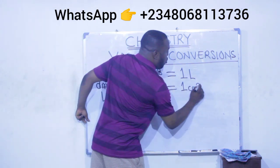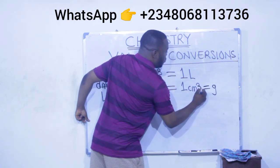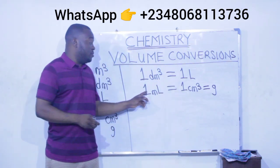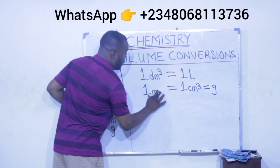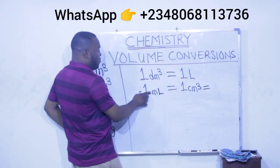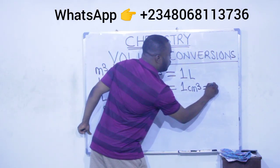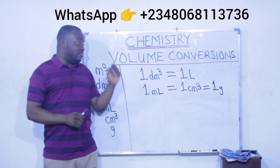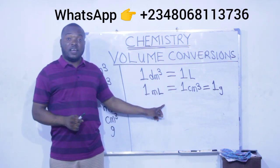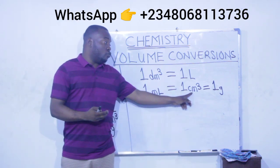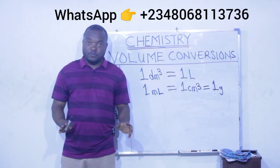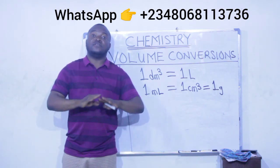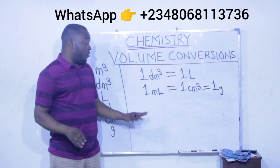They are also equal to gram. So when units of volume are expressed in grams, it is the same as milliliter and also the same as centimeter cube: one milliliter equals one centimeter cube equals one gram. So if a question gives you 500 grams as volume, it is the same as 500 centimeter cube and 500 milliliter.